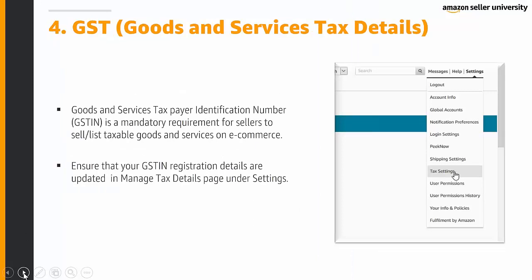Next, regarding GST — Goods and Service Tax details can be found from the Settings tab by clicking on Tax Settings. The Goods and Service Taxpayer Identification Number (GSTIN) is a mandatory requirement for sellers to sell or list taxable goods and services on e-commerce. Ensure that your GSTIN registration details are updated in Manage Tax Details under Settings.